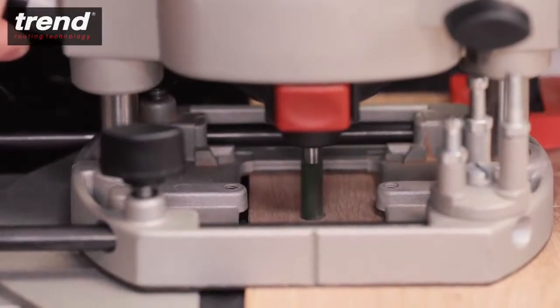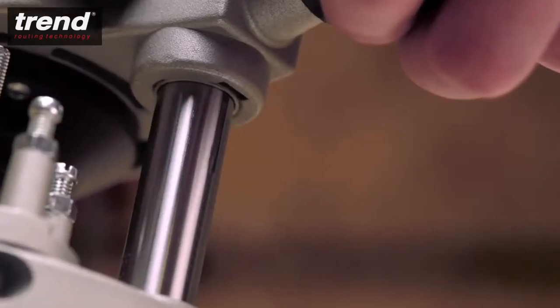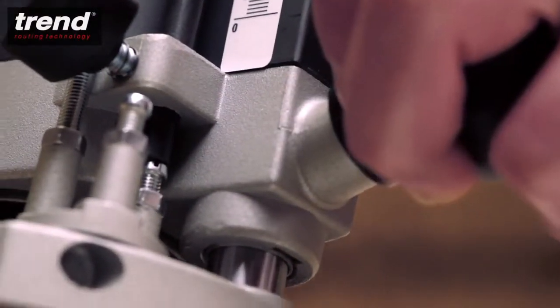To set the depth of the cut, unlock the router by twisting the handle and plunge down until the cutter touches the workpiece. The phosphor bearings on the columns make it smooth to plunge and raise the router body.